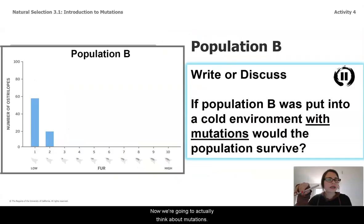But now we're going to actually think about mutations. Population B would be dead if it couldn't mutate in a new environment that was cold. But what if it could mutate? Go ahead, write, pause. Do you think this population would survive?